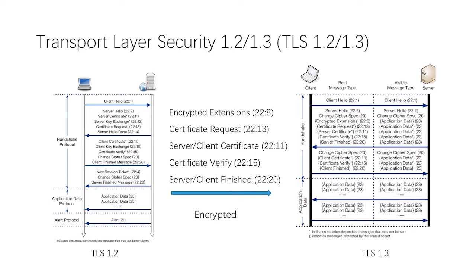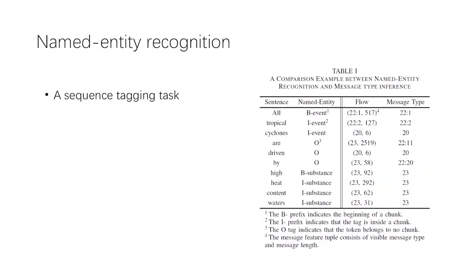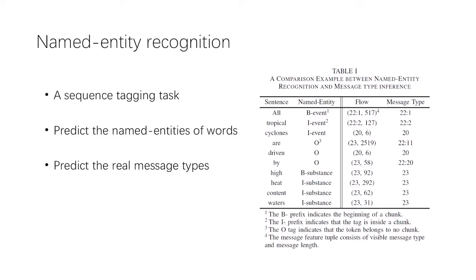Although most handshake messages are encrypted and masked as application data messages, the message length and some plaintext handshake information are still available, so we can exploit this information to infer the types of encrypted handshake messages as alternatives. This message type inference problem is similar to a sequence tagging task called named entity recognition. The table presents a comparison between NER and the message type inference problem: NER determines the named entity of sentence words, while message type inference predicts the real message type of the message feature tuple.